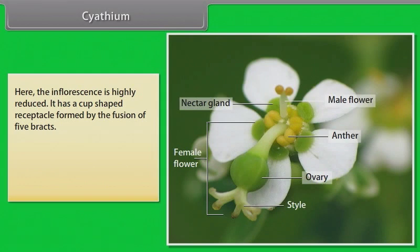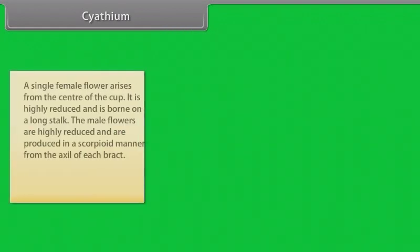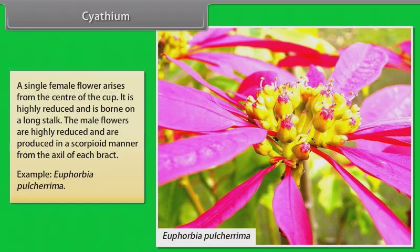In cyathium, the inflorescence is highly reduced. It has a cup-shaped receptacle formed by the fusion of five bracts. On the surface of this cup, generally a yellow colored nectar-secreting gland is present. A single female flower arises from the center of the cup; it is highly reduced and is borne on a long stalk. The male flowers are highly reduced and are produced in scorpioid manner from the axil of each bract. Example: Euphorbia pulcherrima.